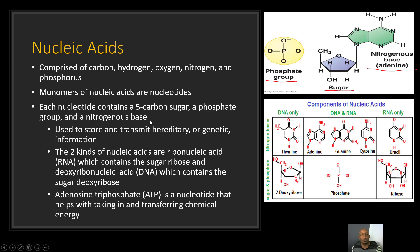Nucleic acids are used to store and transmit hereditary or genetic information. The two kinds of nucleic acids are ribonucleic acid, otherwise known as RNA, which contains the sugar ribose, and deoxyribonucleic acid, or DNA, which contains the sugar deoxyribose. Looking at the components: DNA contains thymine only, while RNA contains uracil only. Both DNA and RNA contain adenine, guanine, and cytosine. For the sugar and phosphate group, DNA has deoxyribose, RNA has ribose, and both contain the phosphate group.